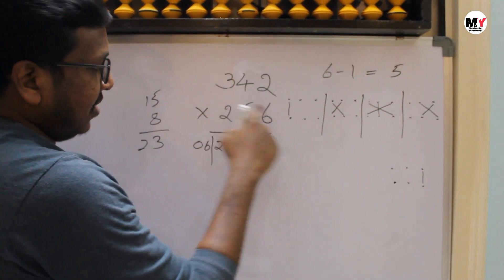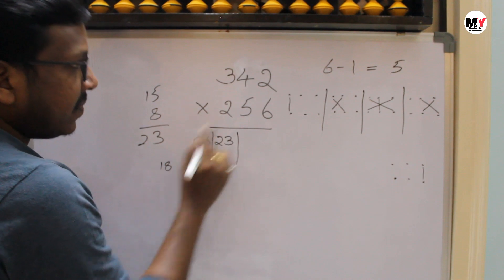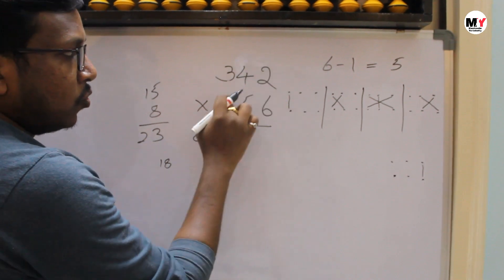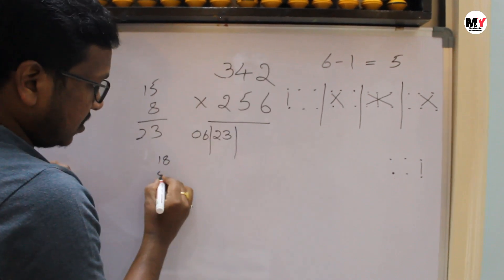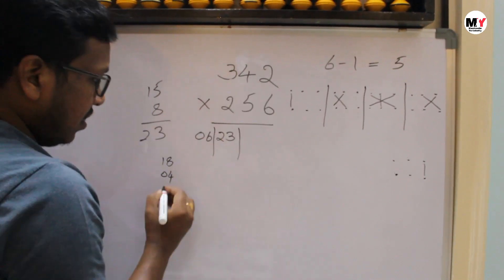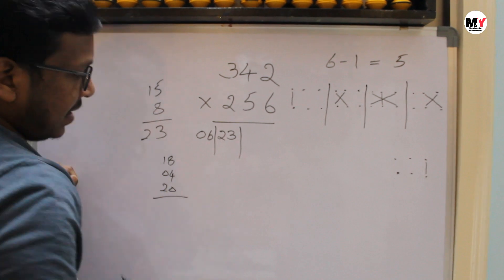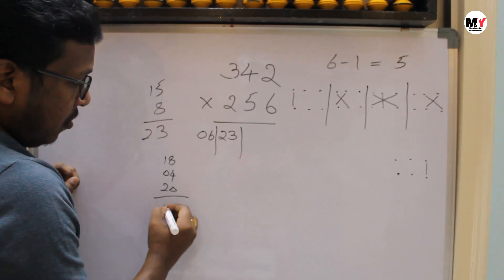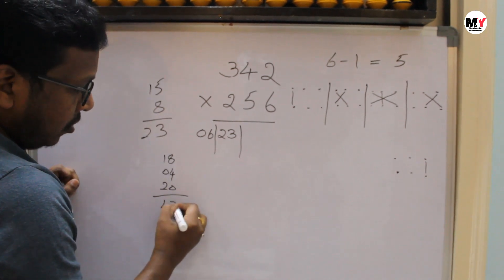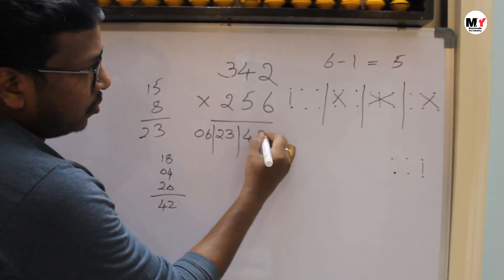Then the star step — first with last: 3 times 6 is 18. 2 times 2 is 4. 5 times 4 is 20. So the total for the star step is 18 plus 4 plus 20 equals 42.